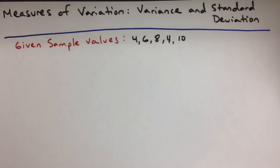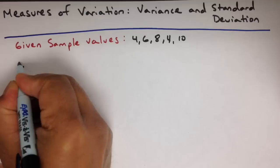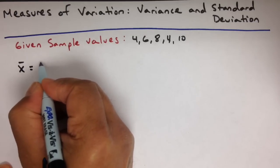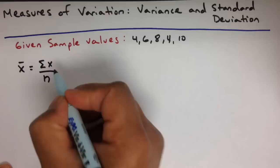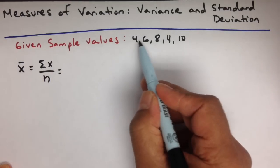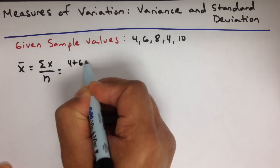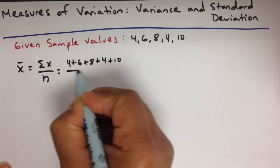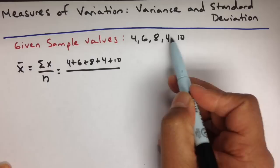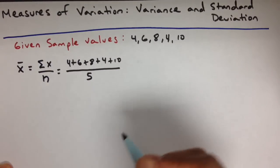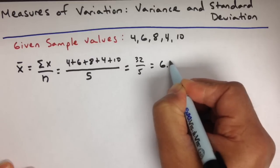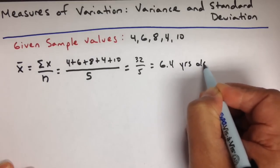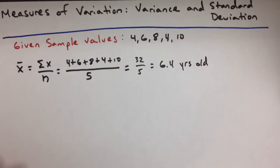So before we get into the equations for those two things, we first need to find our mean. The mean is represented by x with a line on top, and the equation is a sum of all the values that we collected divided by our sample size. So you add them all up: 4 plus 6 plus 8 plus 4 plus 10, divided by our sample size. We collected 5 samples, so the sample size is 5.